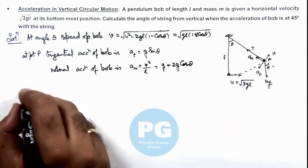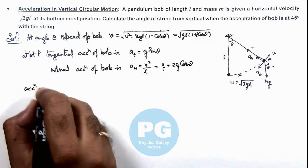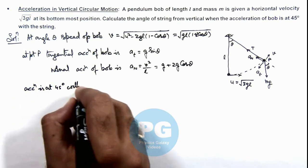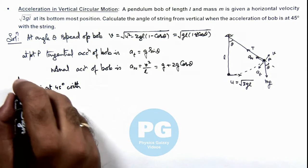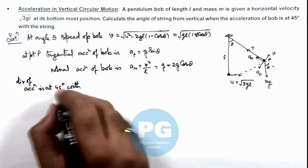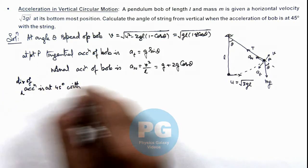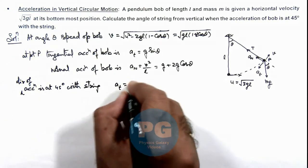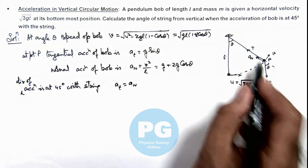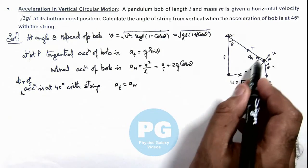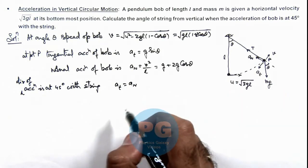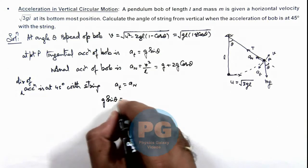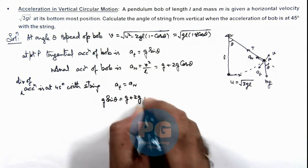Here we can say acceleration is at 45 degrees with string. We should write direction of acceleration is at 45 degrees with string, which is given in the question. ay tangential should be equal to ay normal. When both of these components are equal, the resulting acceleration is at 45 degrees. So on substituting the values, g sin θ = g + 2g cos θ.